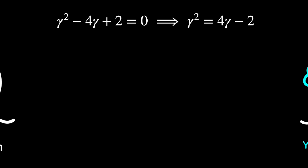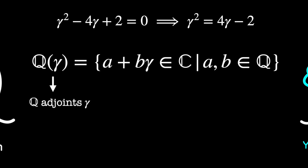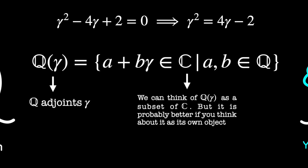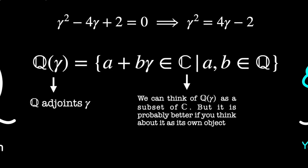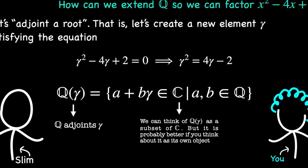This is important because it tells us how to handle powers of gamma. If we encounter gamma squared, we can replace it with 4 gamma minus 2. Let's consider expressions of the form a plus b gamma, where a and b are rational numbers. We can add, subtract, and multiply these expressions using the usual rules of algebra, keeping in mind that whenever we see gamma squared, we replace it with 4 gamma minus 2. These expressions of the form a plus b gamma form our new number system. We call it Q(gamma) — Q adjoined gamma — where Q represents the rational numbers.